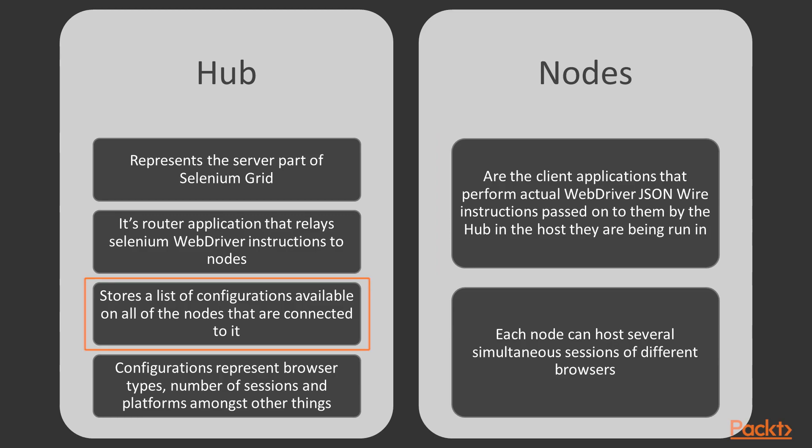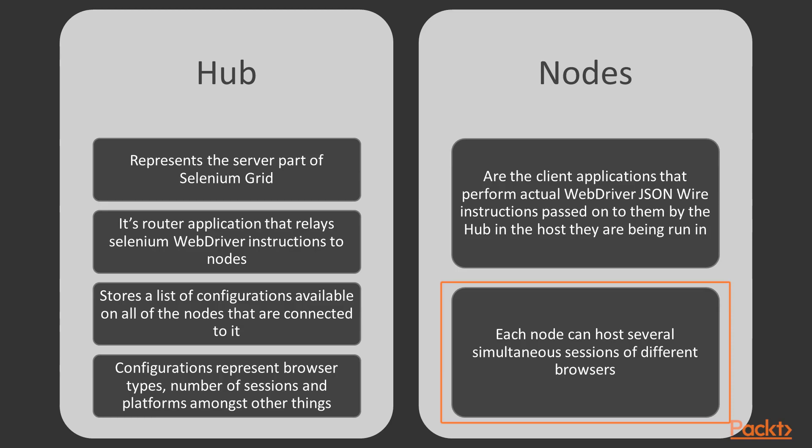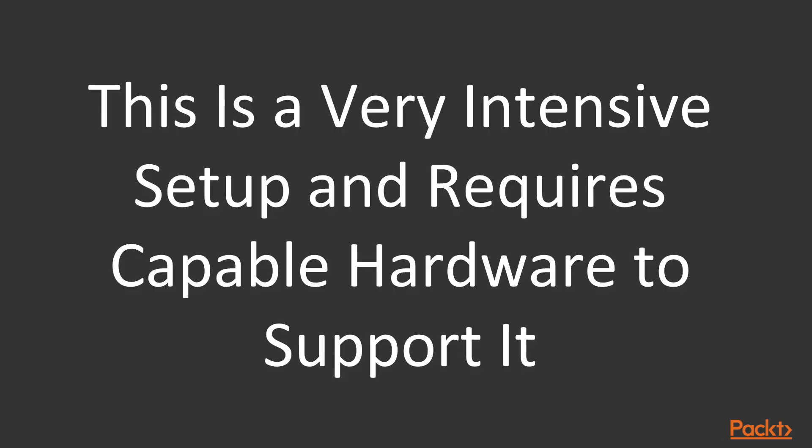HUB stores a list of configurations available on all of the nodes that are connected to it. Configurations represent browser types, number of sessions, and platforms, amongst other things. Each node can host several simultaneous sessions of different browsers. What you have to be aware of is that this is a very resource-intensive setup and requires capable hardware to support it. Now that we have an introduction to Grid,